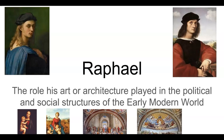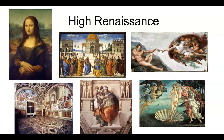Our team's presentation is on Raphael, his role in art and architecture and how it played in the political and social structures of the early modern world. Raphael was a master of the High Renaissance, the period from 1490 to 1527, which was influenced by classical art, but whose works were harmonious, emphasizing proportion, balance, and beauty. His paintings carried major messages of social and political import.